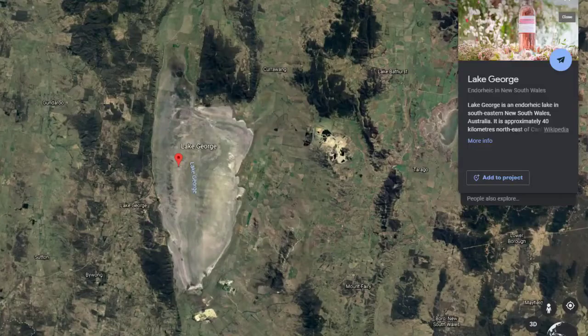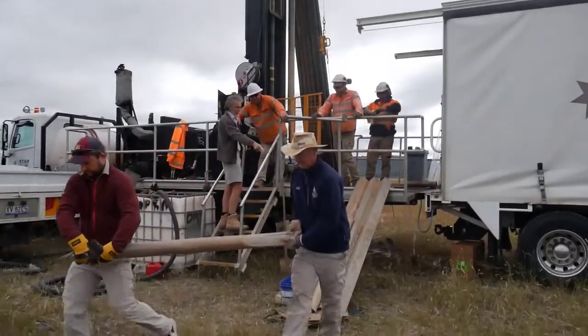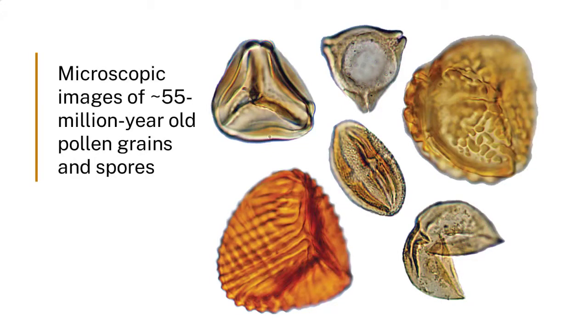Today we're at the northern end of the lake. We're drilling a hole that's gone down more than 80 metres, intersecting sediments that we think are probably more than four million years old. When we process these sediment cores in the lab and extract the pollen grains and identify them, we'll be able to say what the vegetation was like around Lake George more than four million years ago.